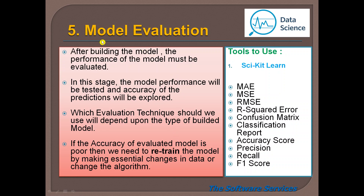In this stage of model evaluation, we will use the scikit-learn library, which is an open-source library for machine learning in Python. In scikit-learn's metrics module, there are many evaluation methods. For evaluating a linear regression model with a continuous output variable, the four key methods are: Mean Absolute Error (MAE), Mean Squared Error (MSE), Root Mean Squared Error (RMSE), and R-squared error.